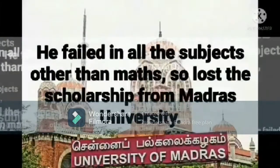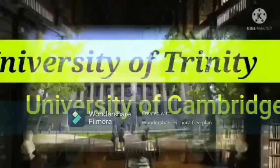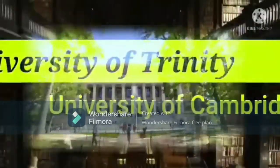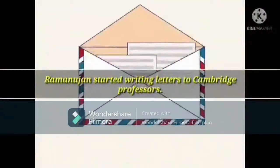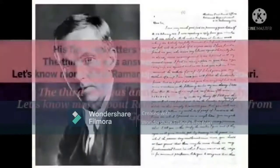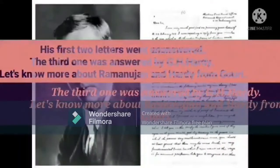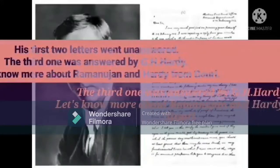He failed in other subjects so lost his scholarship from Madras University. Later on, he received a scholarship from both Trinity and Cambridge. He started writing letters to Cambridge professors. The first two letters went unnoticed. But the third letter was answered by G.H. Hardy, the person who helped him to secure a scholarship.